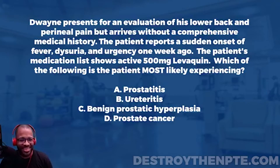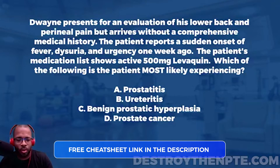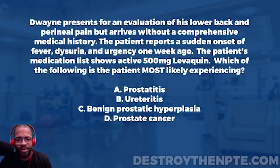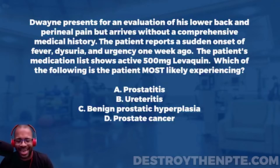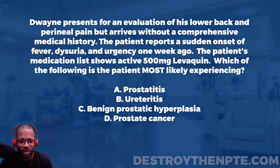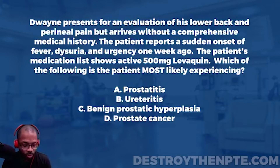For this week's Challenge Wednesday, we have our patient Duane. Duane presents for an evaluation of his lower back and perineal pain but arrives without a comprehensive medical history. The patient reports a sudden onset of fever, dysuria, and urgency one week ago. The patient's medication list shows active 500 milligrams of Levaquin. Which of the following is the patient most likely experiencing? A) Prostatitis, B) Ureteritis, C) Benign prostatic hyperplasia, D) Prostate cancer.